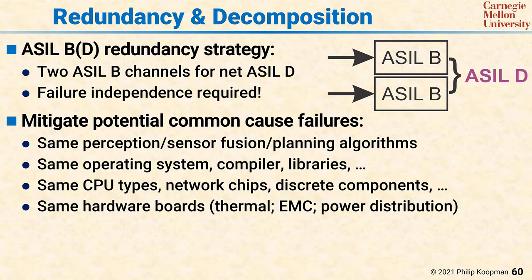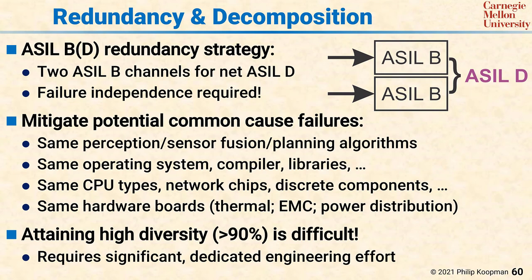To avoid common cause failures in an ASIL B of D system, you either need to have components that directly support the ASIL D requirement, or you need diversity between the two channels so that they will not have common cause failures in a number of different dimensions. While there are some easy techniques such as buying different operating systems to run on each channel, decades worth of research have shown that simply identifying different sources for components does not guarantee perfect diversity and permits some common cause failures.